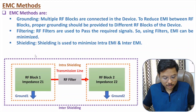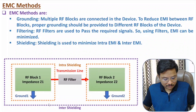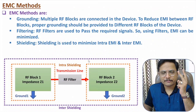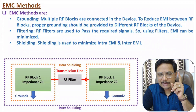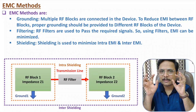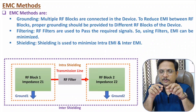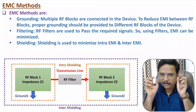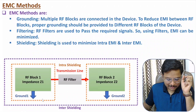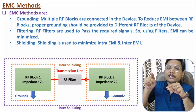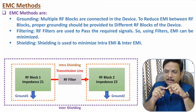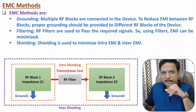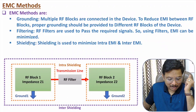The third method is shielding. There are two categories of shielding. Intra-shielding means shielding the individual blocks within a given device, and complete shielding of the entire device is also intra-shielding. There are two types of EMI — inter-EMI and intra-EMI. Intra-EMI happens between different blocks of a given device, so by shielding different blocks we can achieve intra-shielding. By providing complete shielding to a given device, there will be minimum EMI to other devices.